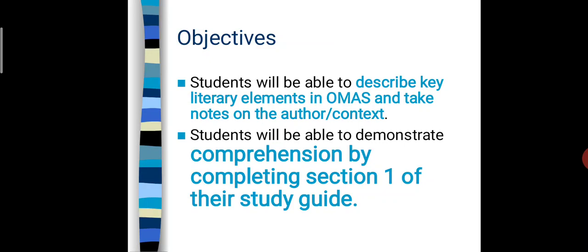Now let's see the objectives — what you are going to learn and achieve through this particular novel. You will be able to describe key literary elements in 'The Old Man and the Sea' and take notes on the author and context. You will understand the context of this novel and the author's background. Students will be able to demonstrate comprehension by completing section one of their study guide, meaning you will learn the textbook by reading it.